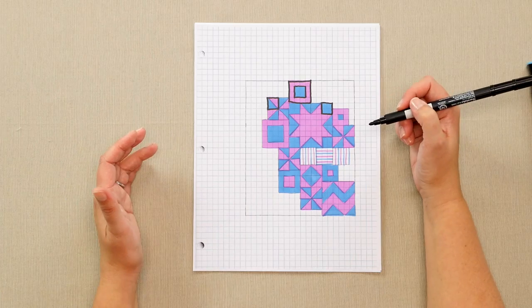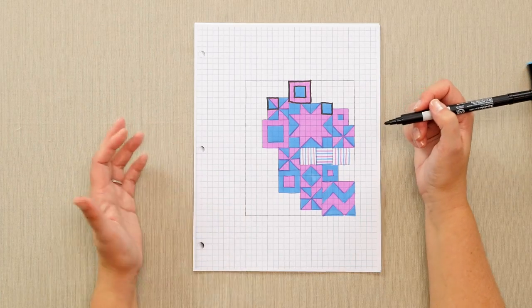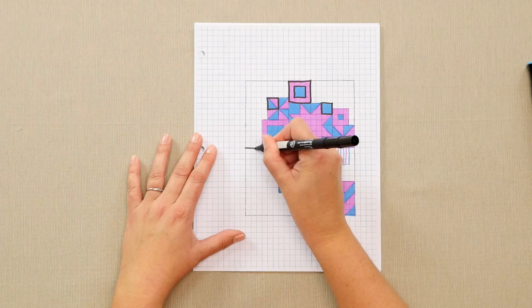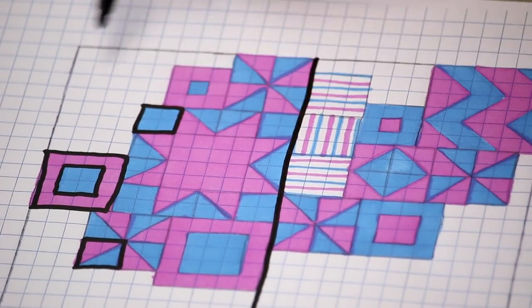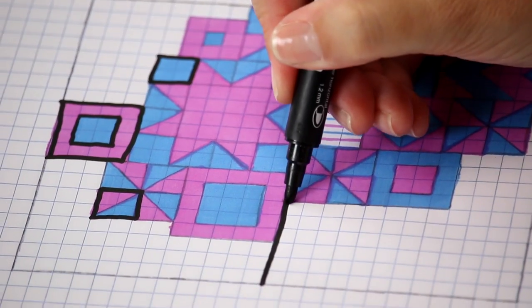To put this quilt together, we need to decide where our seam lines are going to be. We can stitch this line to put the two halves of the quilt together.